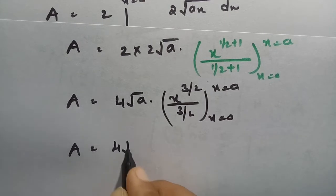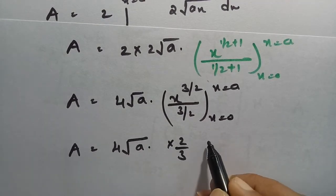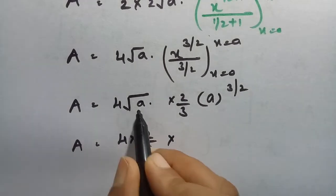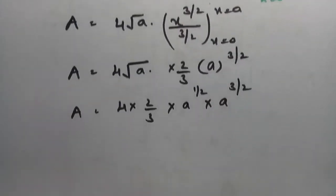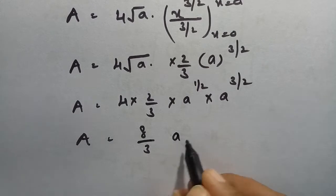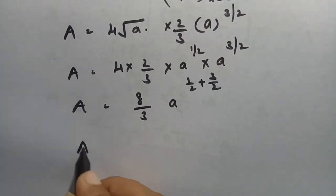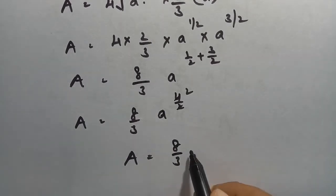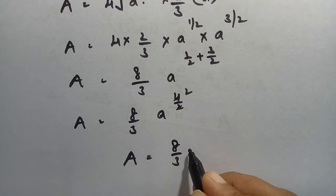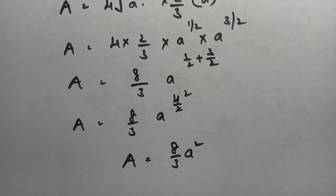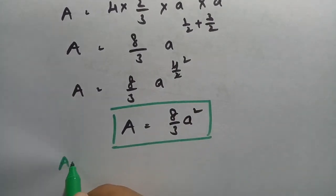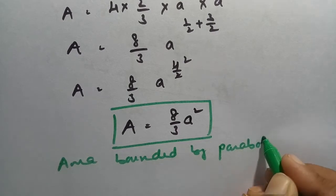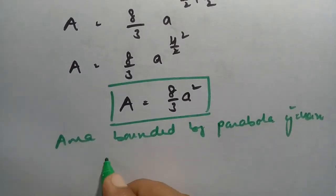Continuing: Area = 4√a × (2/3) × [x^(3/2)] from 0 to a. Substituting x = a: a^(1/2) × a^(3/2) = a^(1/2 + 3/2) = a². So Area = 4 × (2/3) × a² = 8/3 × a². The area bounded by the parabola y² = 4ax and its latus rectum is 8a²/3 square units.